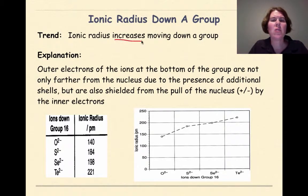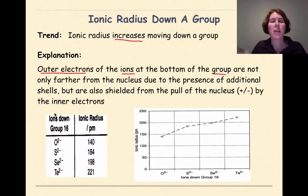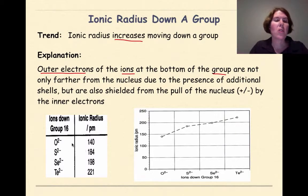Ionic radius is going to increase moving down a group. The outer electrons of ions at the bottom of the group are not only farther from the nucleus due to additional shells, but are also shielded from the nucleus by the inner electrons — the same shielding effect we saw with atomic radius. Going from oxygen to sulfur to selenium to tellurium in group 16, the ionic radius increases down the group, as confirmed by the graph.